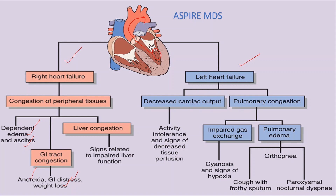The second feature of left-sided heart failure is pulmonary congestion in the lungs, which leads to two things: pulmonary edema and impaired gas exchange. The impaired gas exchange leads to signs of hypoxia and cyanosis.